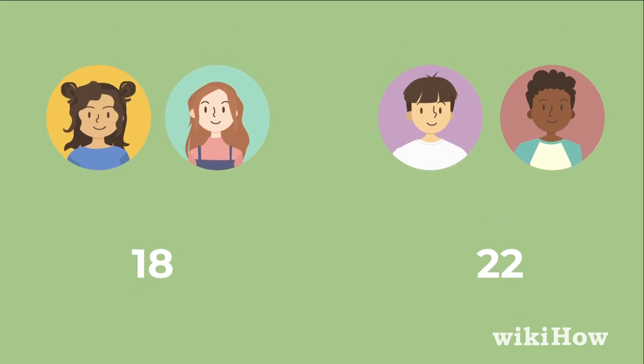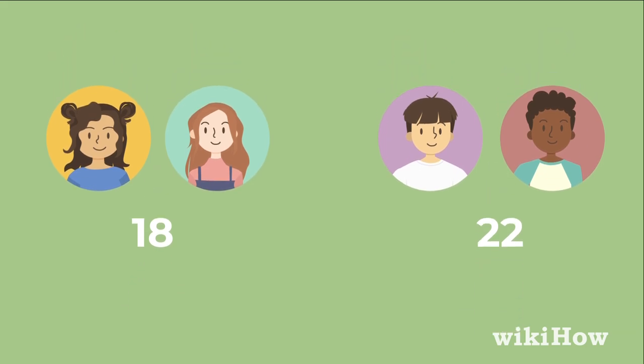If a round ends and a player or team has over 21 points, they must reduce their score to 11, and the game continues.